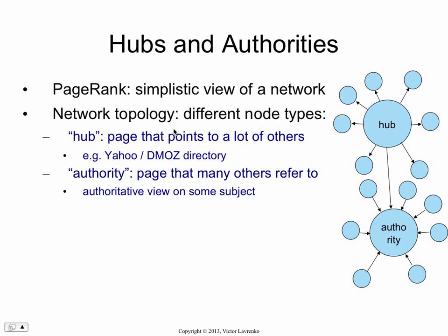So a hub is a directory that points to lots of useful stuff. An authority is a page that lots of other pages point to — maybe a page that has very informative information, so everybody cites that page. Of course, now we know they won't cite — they'll just copy it and put it on their web page. So the idea is pages that have lots of inlinks are authoritative pages.